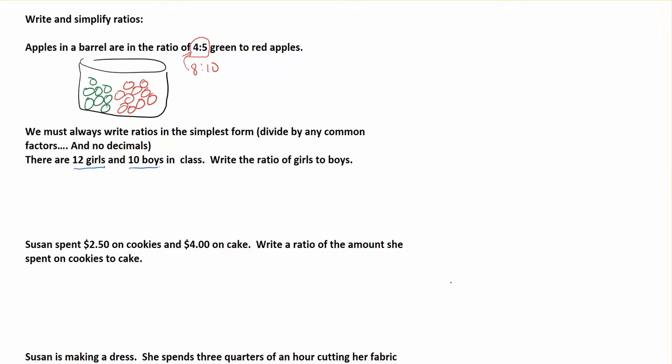There are 12 girls and 10 boys in the class. Write the ratio of girls to boys. My order matters here. I'm looking at girls to boys, that means I want to put in girls, then the colon, then the number of boys. So I have 12 girls to 10 boys. Here I need to look for a common factor that I can use to simplify. In this case, they're both divisible by two.